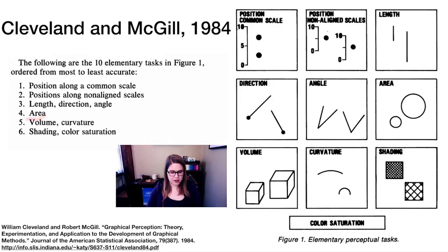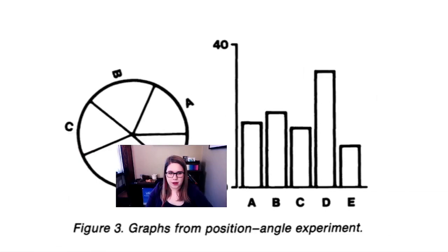Then area, it turns out people are not very good at judging areas, and they are even worse at judging volume, different volumes, or different degrees of curvature. And then the last one is shading or color saturation. So that's the very hardest for people to make accurate judgments about.